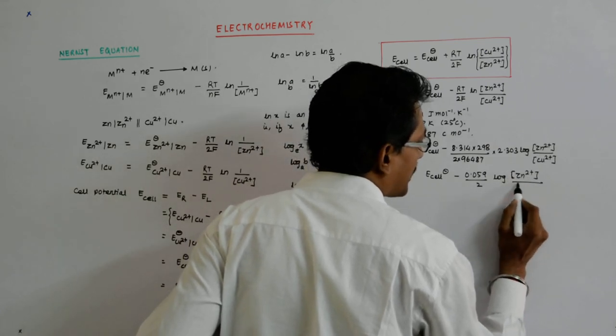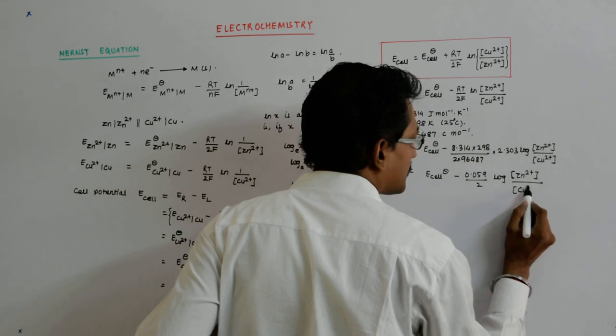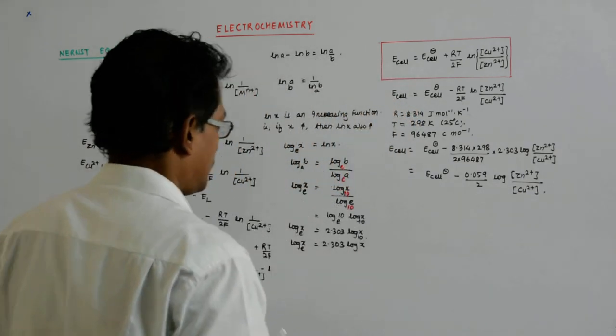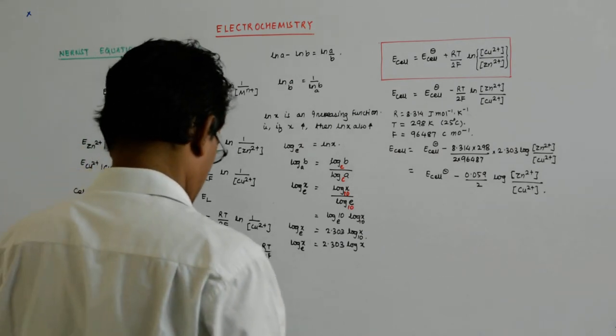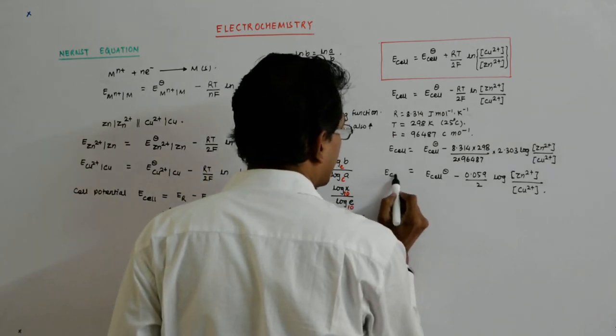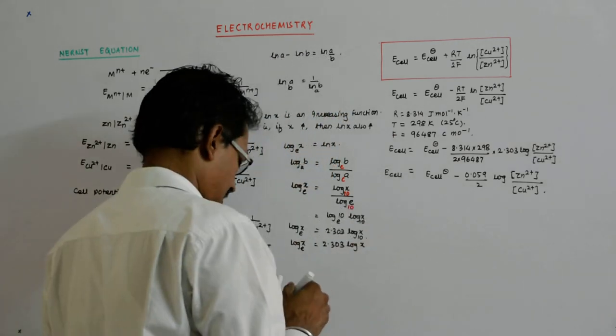This is left upon right. So E_cell... that is our cell potential, the cell potential. This is our cell potential.